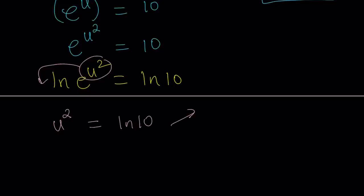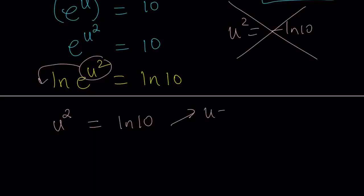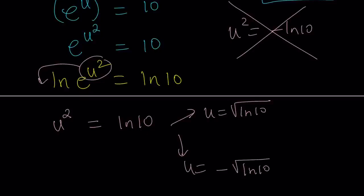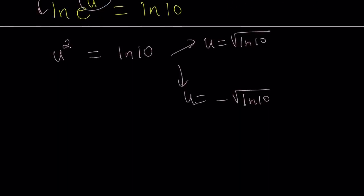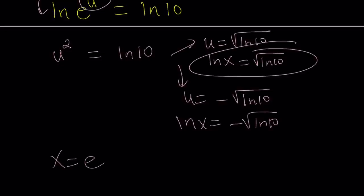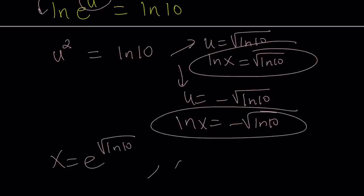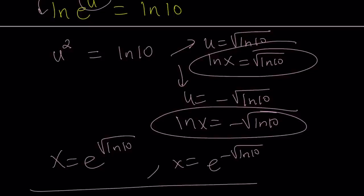From here we get two solutions like before — there are two numbers whose square equals ln 10, and ln 10 is positive, so real solutions exist. This gives us x equals e to the power square root of ln 10, and x equals e to the power negative square root of ln 10. Those are the same solutions we got before.